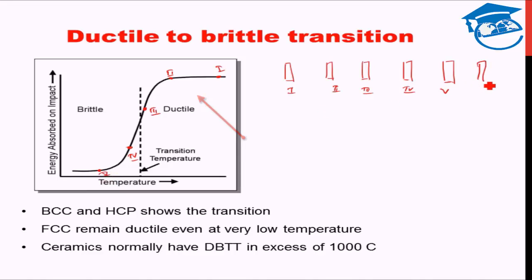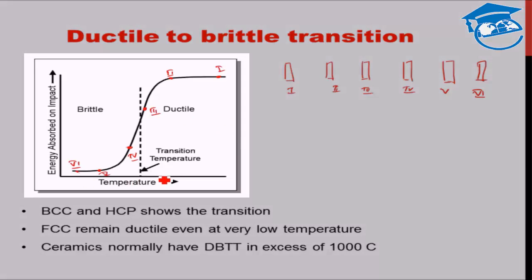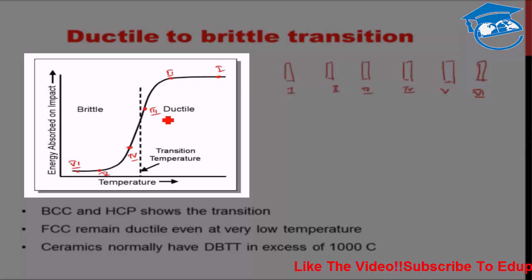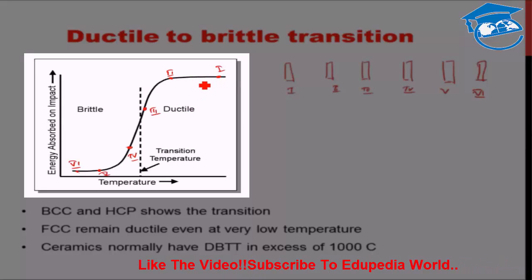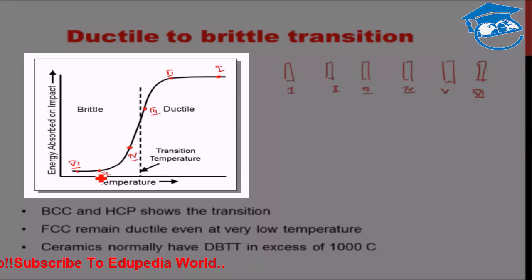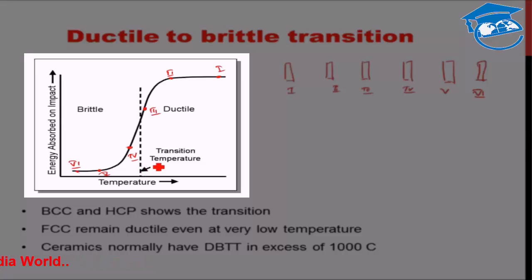Using this data, a graph is generated between energy absorbed on impact against temperature. For certain materials there will be a sudden dip in the amount of energy required to fracture it — at higher temperatures the energy required is very high, then suddenly there is a dip and the energy required reduces to quite low values. That sudden dip determines the ductile-to-brittle transition temperature.